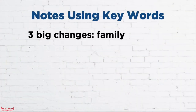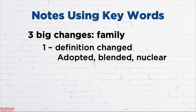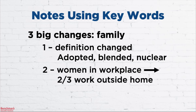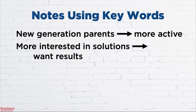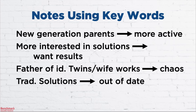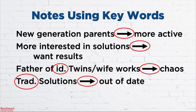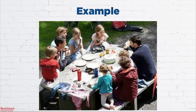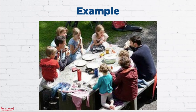How did you do? Before we look at the sample answer, let's take a look at the notes I took and compare them to yours. Three big changes — family. One: definition changed — adopted, blended, nuclear. Two: women in workplace, two-thirds work outside home. Three: men parenting. New generation parents are more active, more interested in solutions, want results. Father of identical twins, wife works, yields chaos. Traditional solutions are out of date. Notice how I used symbols like arrows and numbers, and abbreviated words when I could. You should use a system that works for you — the more you practice, the more you'll understand what works best. The photo was of a family enjoying time together, so you should have already been prepared for the topic.